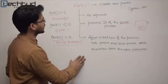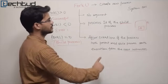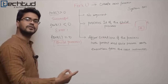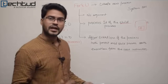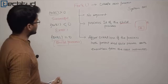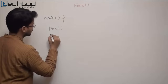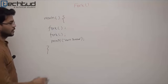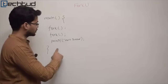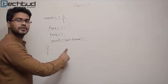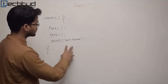That's the whole theory about fork. Now let's take an example and understand how it actually works. The key points: no argument, returns process ID of child to parent, and after successful creation both parent and child start executing from the next line. In our example, we have two fork calls inside main and finally a print function that prints 'Hello Tech Dude'. We want to see how many times the print runs.